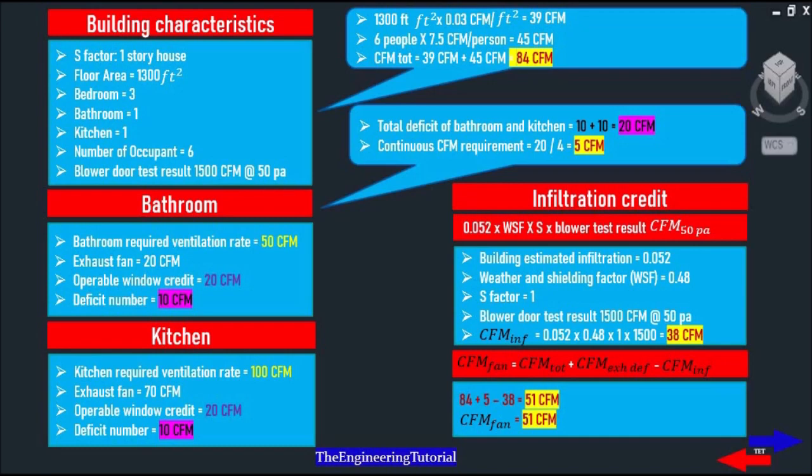Our first step is to calculate the total desired ventilation rate and the first part of the equation deals with the floor area. We multiply the 1300 square feet by 0.03 that gives us 39 CFM. For the second part we need to now consider the number of occupants. As we know there are 6 occupants so we will multiply 6 occupants by 7.5 CFM per occupant that gives us 45 CFM to deal with the contaminants which are generated by occupants within the building. So we need to now add them together 39 plus 45 that gives us a total required ventilation rate of 84 CFM.